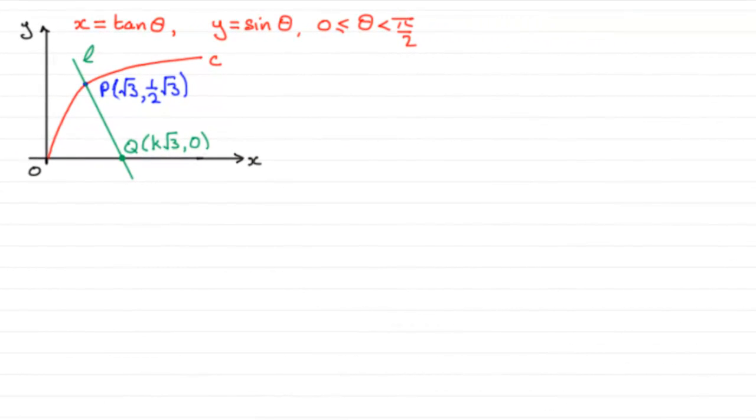Now for this part of the question, we're told that the normal at the point P is this line L, and it cuts the x-axis at the point Q with coordinates k root 3 and 0. And we've got to work out what this constant k is.